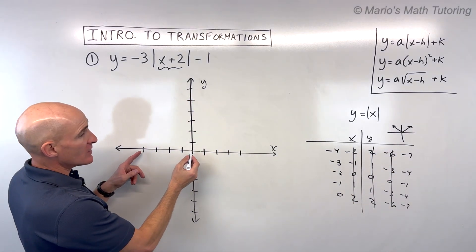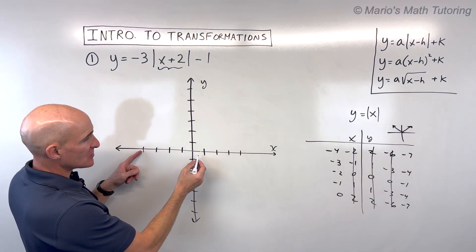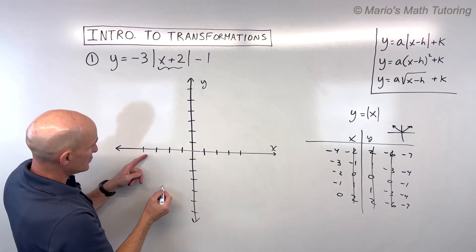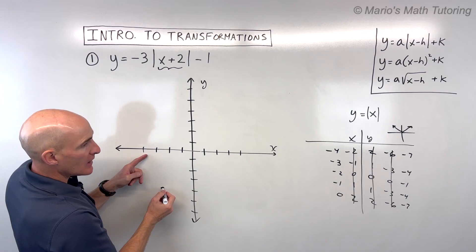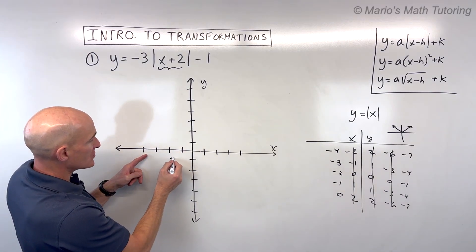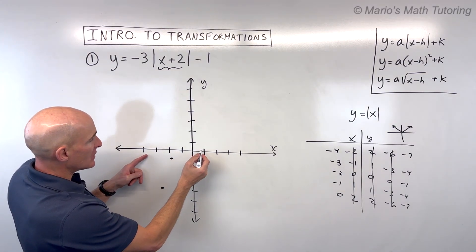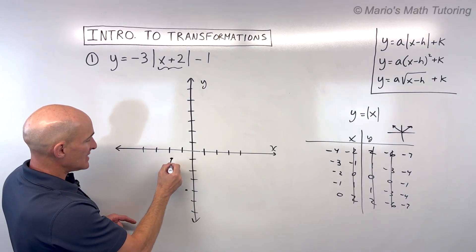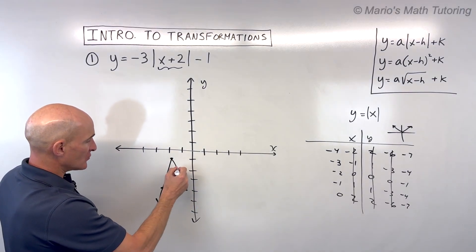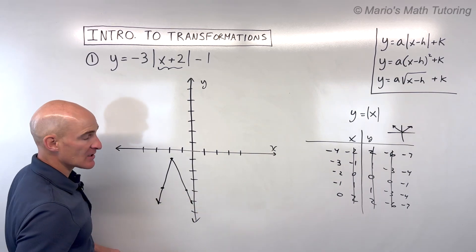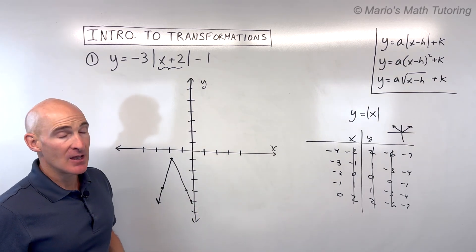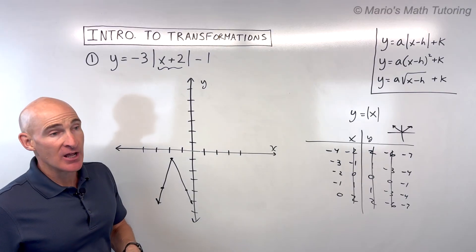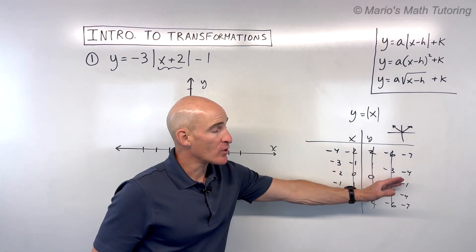Let's plot the new points. Negative four, negative seven goes off the graph a bit. Negative three, negative four is right about here. Negative two, negative one is right about here. Negative one, negative four is right about here. And you can see there's our absolute value graph — opening down, narrower because we stretched it.